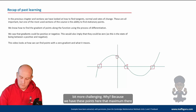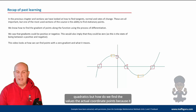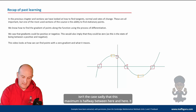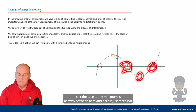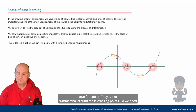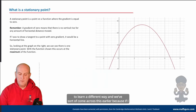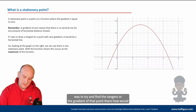Because we have these points — a maximum there and a minimum there. We've already used the terminology in quadratics, but how do we find the actual coordinate values? Because for a cubic it isn't the case that the maximum is halfway between the crossing points. They're not symmetrical around these crossing points. So we need to learn a different way.